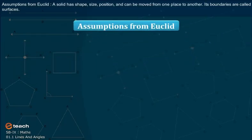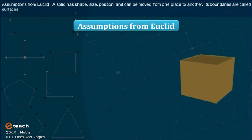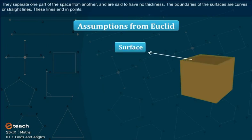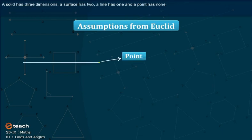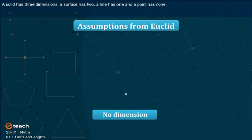Assumptions from Euclid: A solid has shape, size, position and can be moved from one place to another. Its boundaries are called surfaces. They separate one part of the space from another and are said to have no thickness. The boundaries of the surfaces are curves or straight lines, and these lines end in points. A solid has three dimensions, a surface has two, a line has one, and a point has none.